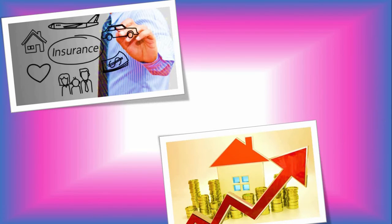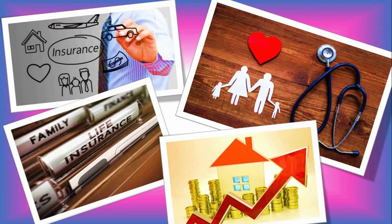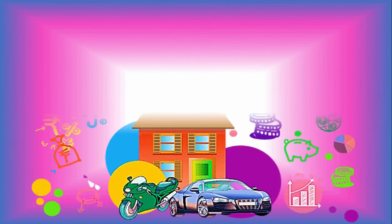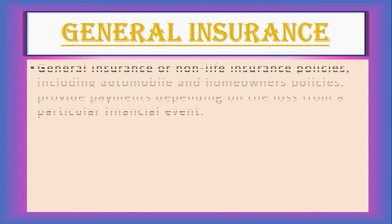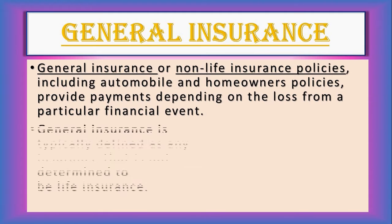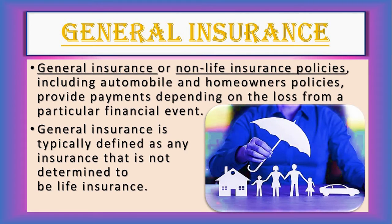Hello learners. In our previous video we got to know about insurance in detail — what insurance is and its types, including life insurance. Today we will discuss general insurance in detail, where automobile and homeowner's policies provide payments depending on the loss from a particular financial event. General insurance is typically defined as any insurance that is not determined to be life insurance.